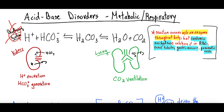So in summary: the buffering reaction occurs all over the body at all times, assisted by carbonic anhydrase in specific areas. When the buffering system gets overwhelmed and blood pH starts becoming acidemic or alkalemic, the kidneys and lungs step in — regulating bicarbonate, hydrogen, and CO₂ — to try to return blood pH back to normal.